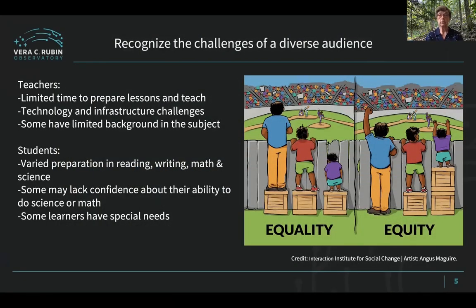We recognize the challenges of most teachers: they have limited time to prepare and teach lessons, challenges in their technology or infrastructure within the classroom or school, and sometimes at the pre-college level, some teachers have a limited background in astronomy, so they don't really feel confident about teaching it. Students in a typical classroom have a diverse range of skills, and a lot of them don't feel confident in being able to do math or science. Some students have special needs. So how do we make data accessible for all students?